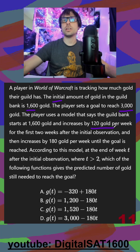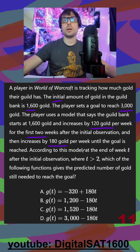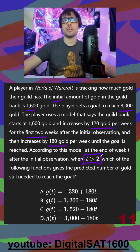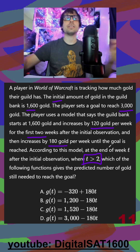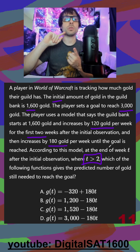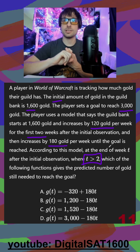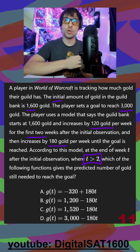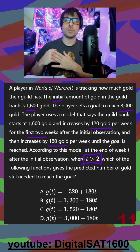It increases by 120 gold per week for the first two weeks after the initial, and then increases by 180 gold per week until the goal is reached. According to this model, at the end of week T after the initial, where T is greater than 2. We can pause there because that inequality is going to be really important. So we would categorize this as a linear equation problem where your slope changes — it's only 120 for two weeks, and then it's 180 for the rest of the time.